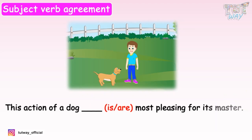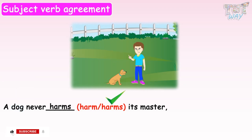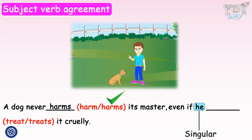This action of a dog dash most pleasing for its master — is or are? Dog is a singular noun, so we will use is. The action of a dog is most pleasing for its master. A dog never dash its master — harm or harms? Dog is a singular noun, so we will put S after the verb. A dog never harms its master, even if he dash it cruelly — treat or treats? He is a singular noun, so we will put S after the verb. He treats it cruelly.